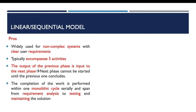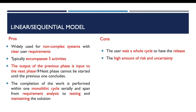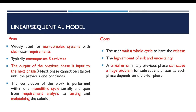For the disadvantages of this model: the user has to wait the whole cycle to have a release. Another disadvantage is the high amount of risk and uncertainty. This is due to two factors: first, an error in any previous phase can cause a huge problem for subsequent phases, as each phase depends on the prior phase. The second factor is its resistance to change and the need for correction and rework.